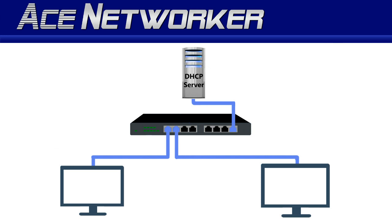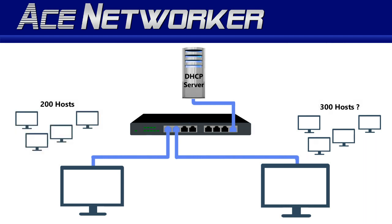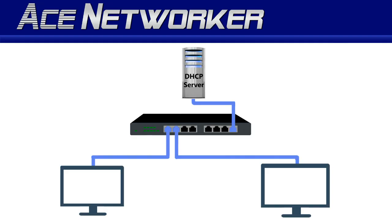If you just have two hosts, as in our example, or even 10 to 15 hosts on a small network, you can easily statically assign IP addresses to each host. But imagine the complexity when you have 50 to 100 hosts or components on a network, or 200, 300, or 400 or more. No one wants to manually, statically assign all those IP addresses. What if you inadvertently use an IP address you previously used on another host? How do you keep track? This is where DHCP comes into play in the biggest way possible.